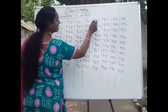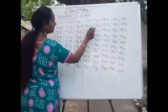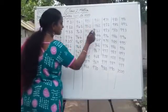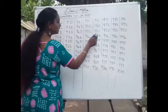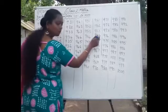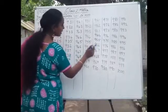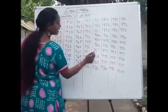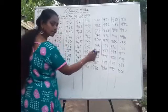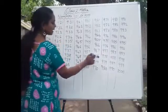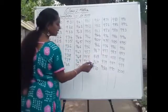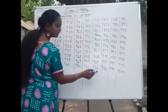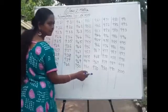Next: 961, 962, 963, 964, 965, 966, 967, 968, 969, 970.